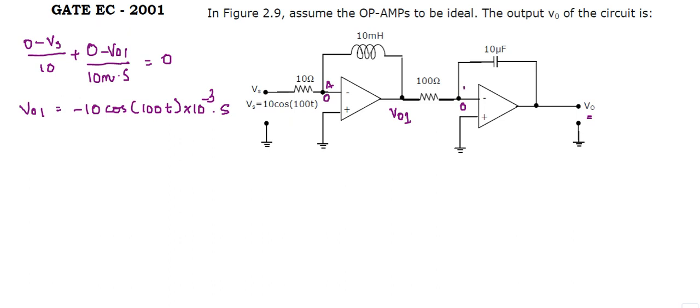Let this node be B. Writing the equation for node B we get that 0 minus V0,1 upon 100 plus 0 minus VO upon this capacitor, hence it will come as 1 upon Cs, that is 1 upon 10 microfarads into S, is equal to 0.